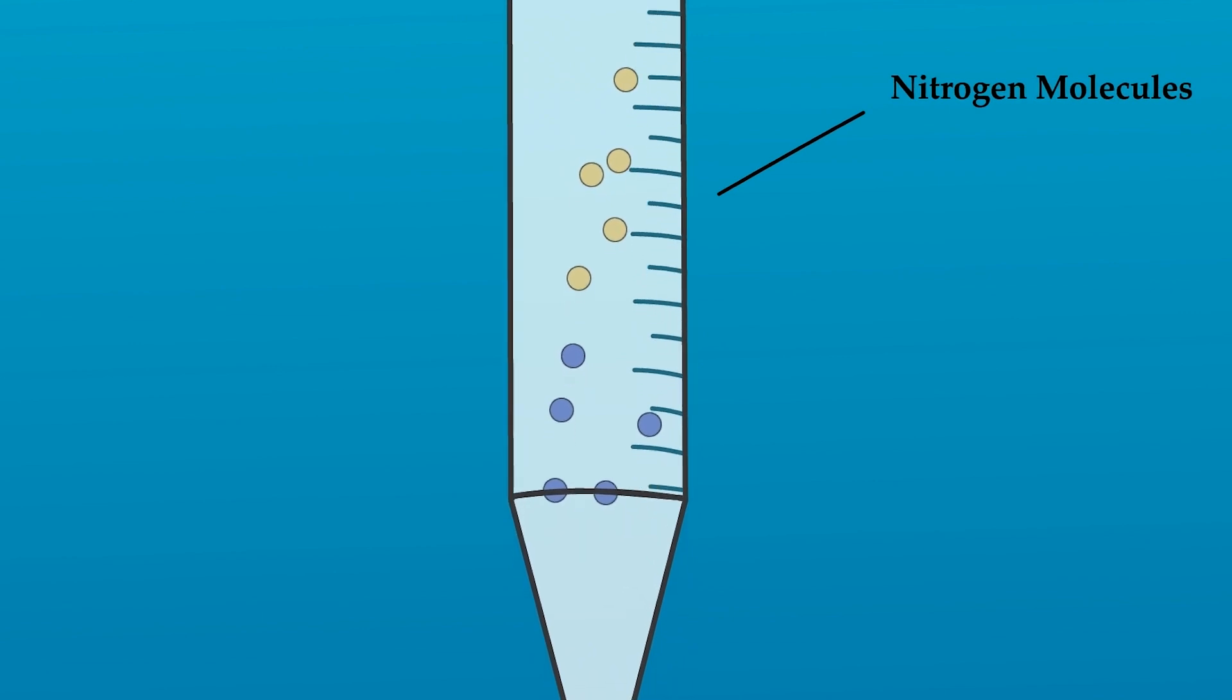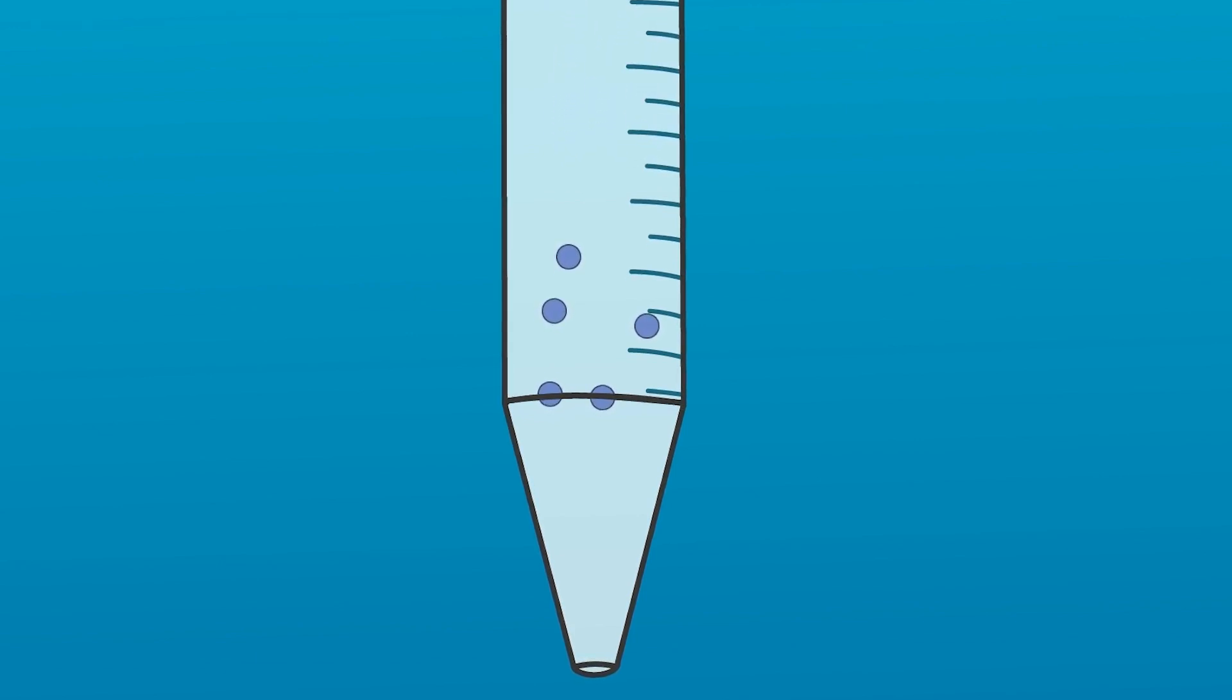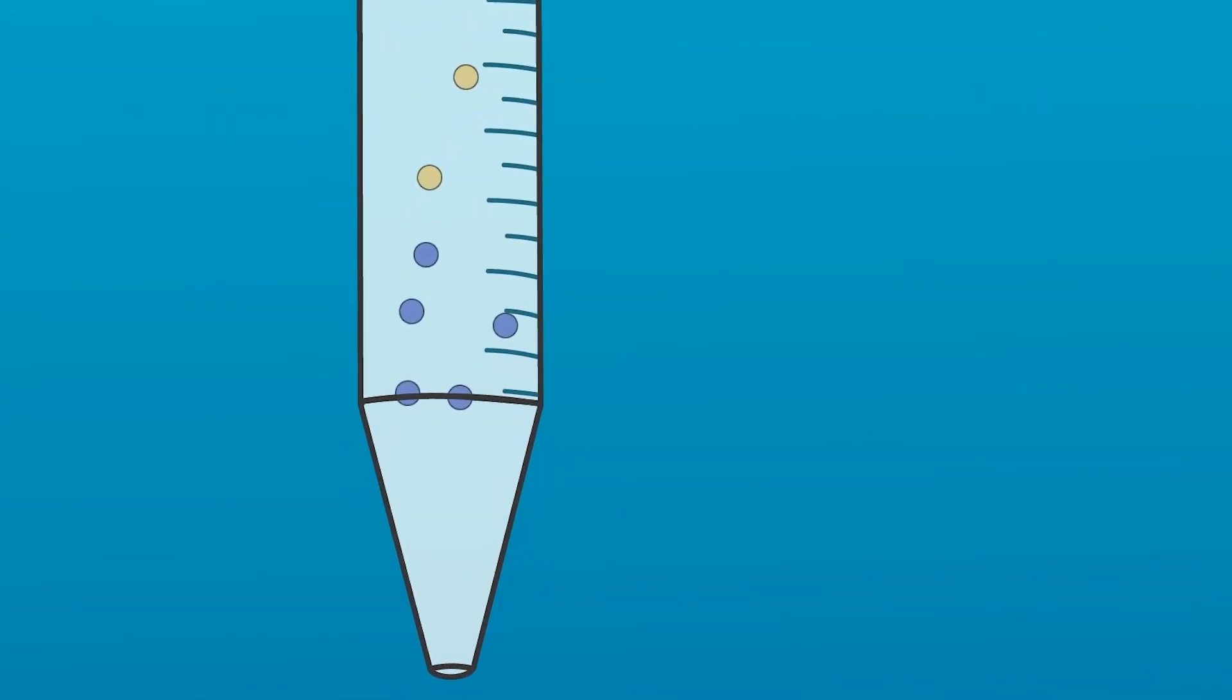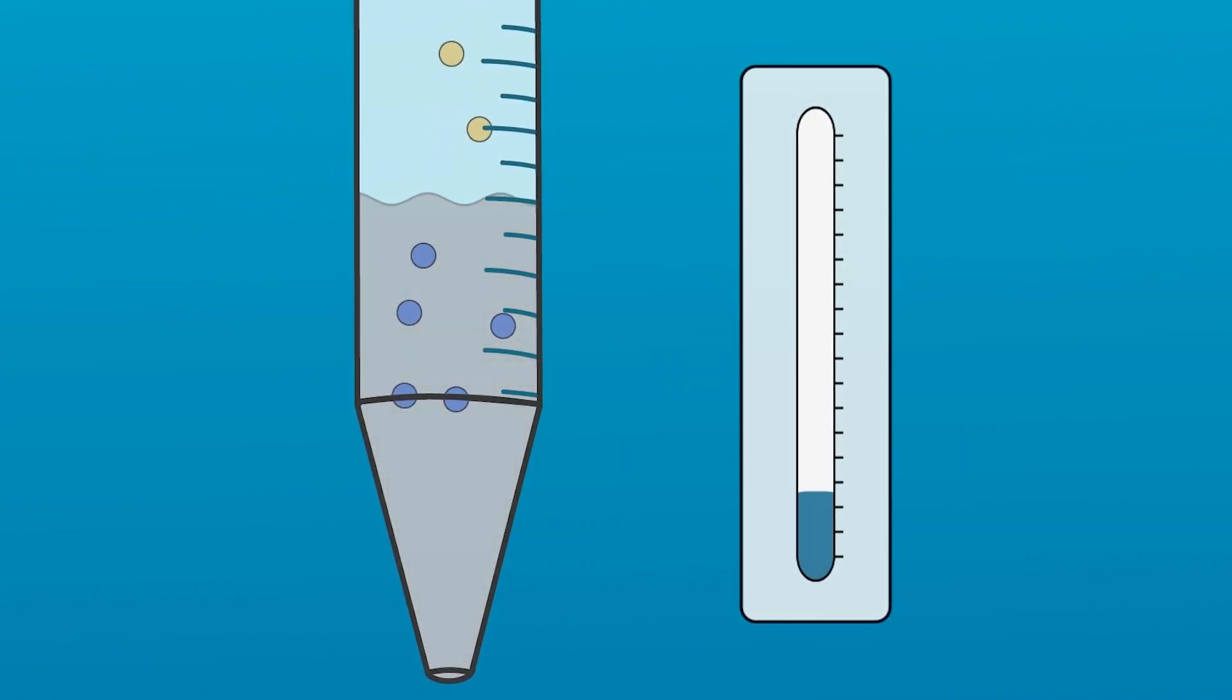The nitrogen blowdown method decreases the vapor pressure above the sample by applying a steady stream of nitrogen gas on the solvent's surface. The nitrogen gas can also cool the sample slightly, which decreases the energy of the molecules, slowing down their movement and ability to vaporize.